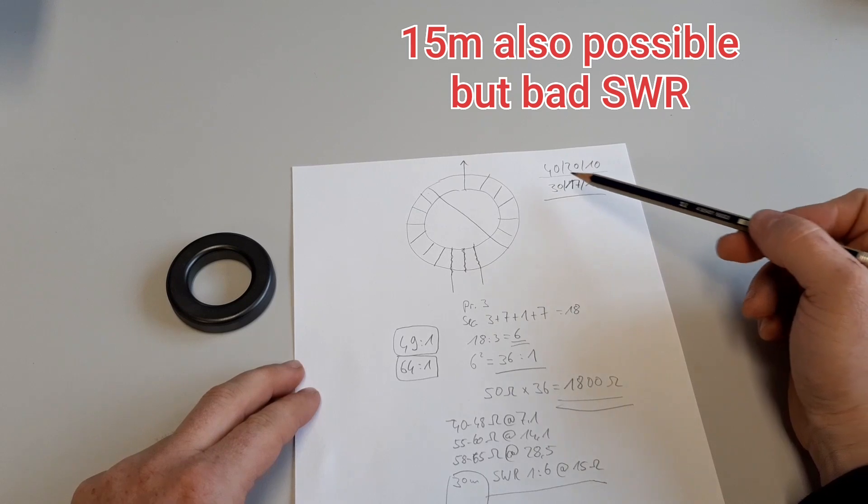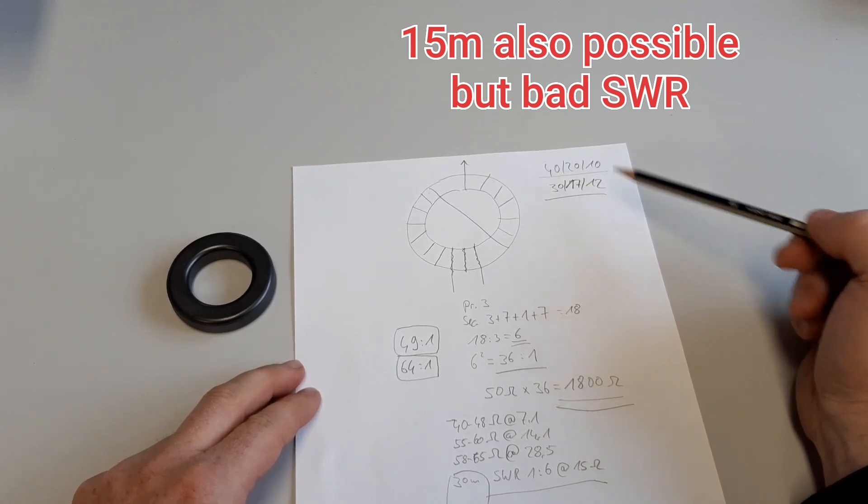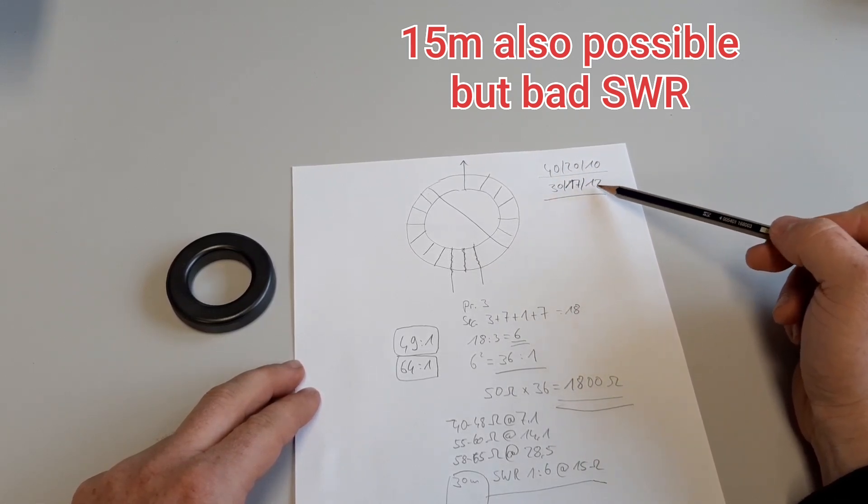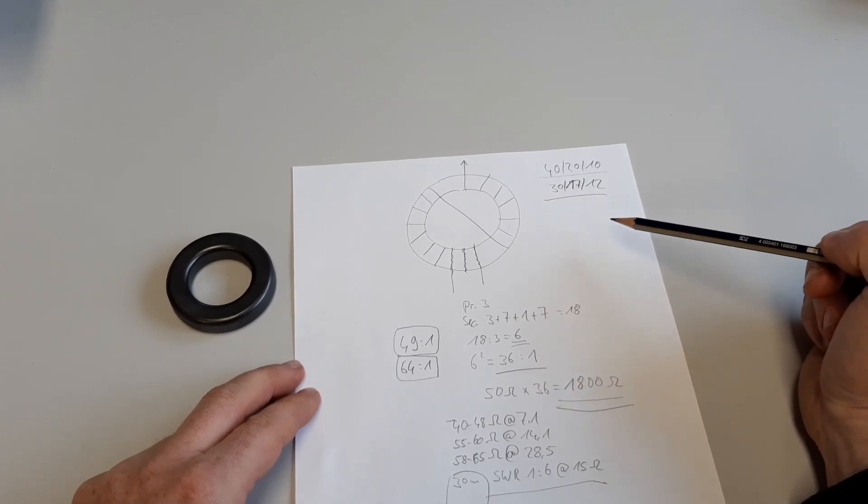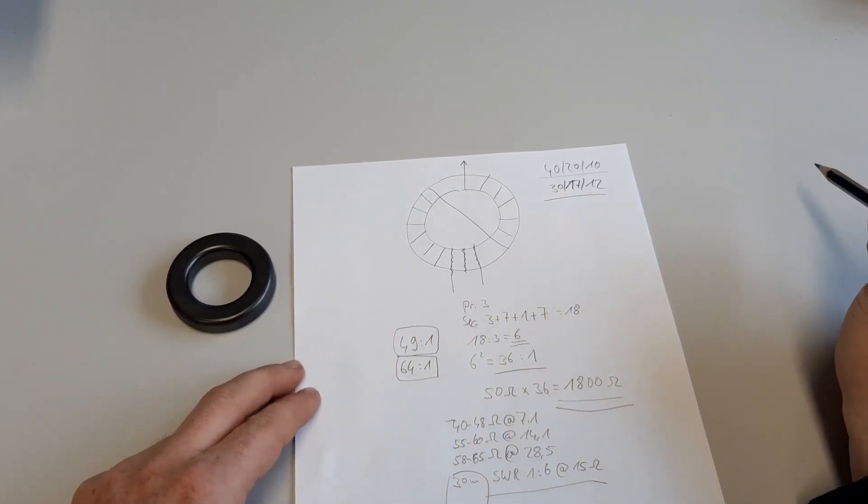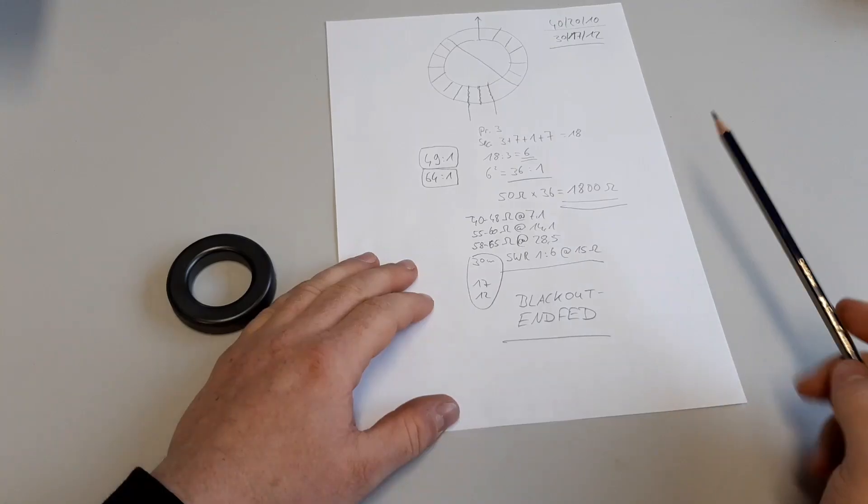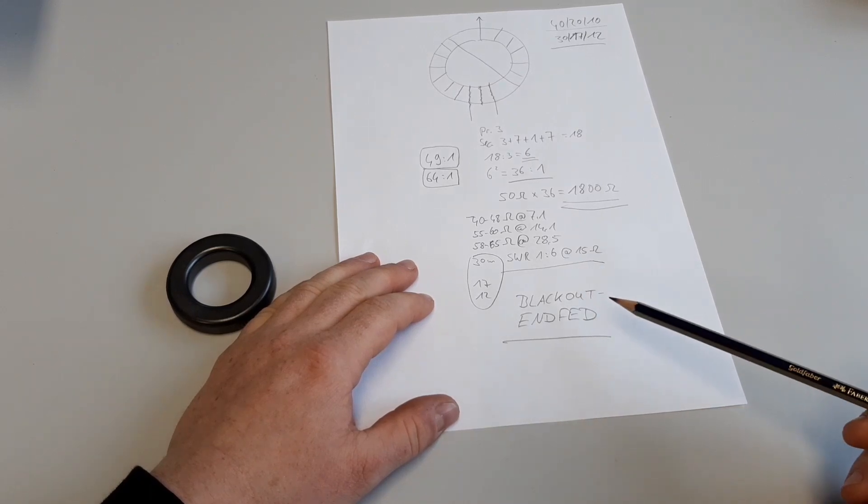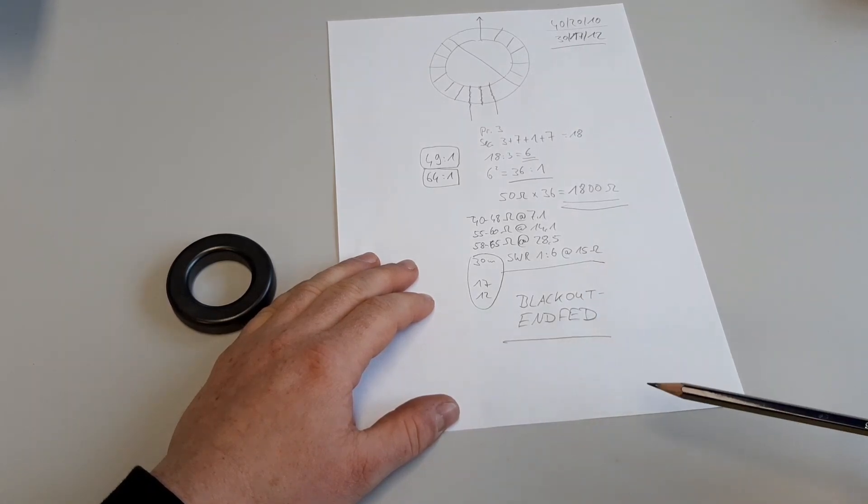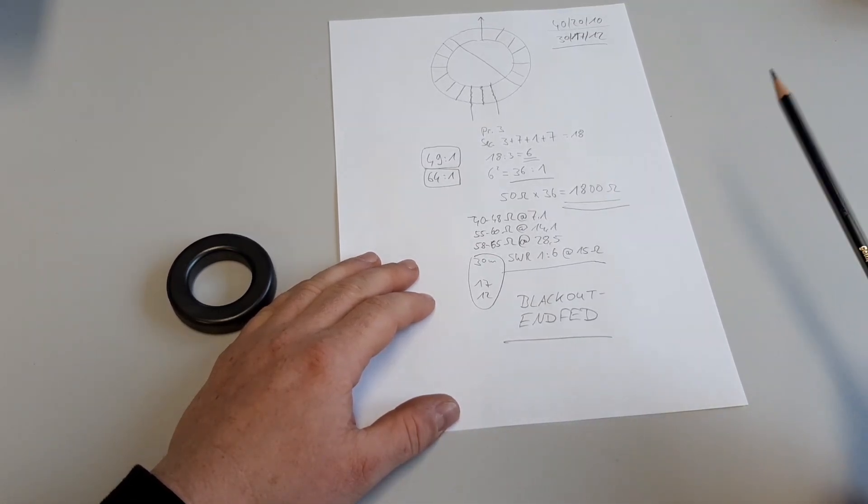This antenna is made for 40, 20, and 10, but 30, 17, and 12 is also possible with an FT817. I don't know how it is with another one, but we can check that later. Because of that I call this antenna blackout NFED. Why blackout? It's just my blackout in the last video.